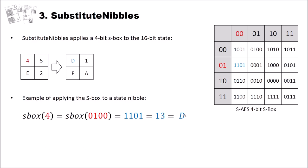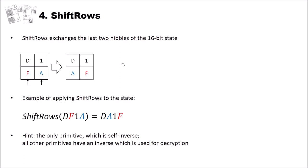Shift Rows exchanges the last two nibbles of the 16-bit state. For example, we have DF and 1A, and we obtain DA1F. So the last nibbles of the two bytes are just exchanged. One important hint: Shift Rows is the only primitive which is self-inverse. All other primitives have an inverse which is used for decryption that is different from the actual function. In this case, clearly, if we apply Shift Rows again, we come back to the original.